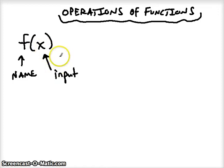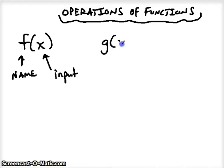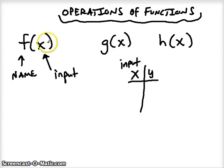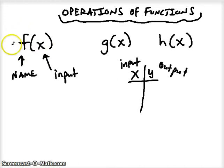The function name letter can change — it can be any letter in the alphabet. The ones you'll see most are F and G, and after that usually H. The input is almost always x. If we think about an x-y table, x is always the input, and y is usually our output. For functions, the entire expression is the output — we define our functions by the inputs and we get the outputs out.